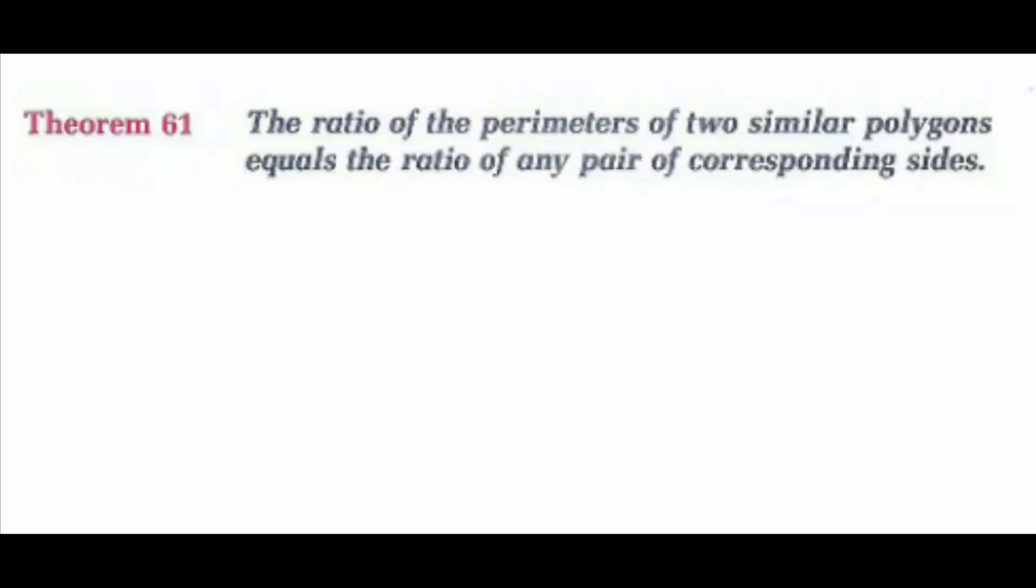Now theorem 61 tells us the ratio of the perimeters of two similar polygons equals the ratio of any pair of corresponding sides. Because if we think about it, if I keep increasing by the same ratio each time, let's say two-thirds, two-thirds would go to four-sixths, would go to six-ninths, would go to eight-twelfths. If I simplified this again, it would still be two-thirds. So as long as I keep increasing my perimeters in proportion to one another, the ratio of the perimeters will still be the ratio of any pair of corresponding sides.